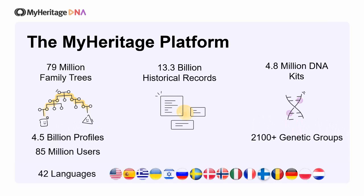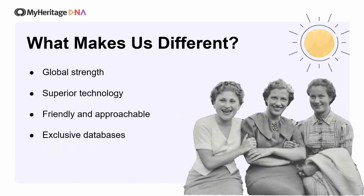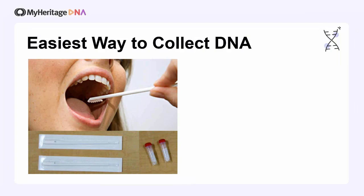Also very important is the language capability that MyHeritage has, supporting and being available in 42 languages. So it doesn't matter what language you or your relatives speak, read, or write — MyHeritage has a way to support that and allow you to do genealogy in that language. This is definitely one of the things that makes us different from other companies. We also have superior technology, an approachable interface, exclusive databases, and the easiest way to collect DNA.